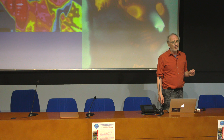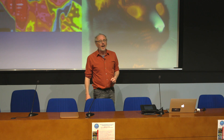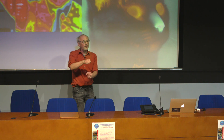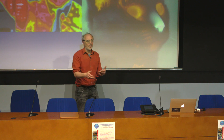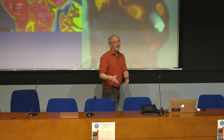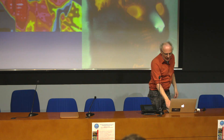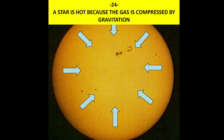Why are the stars hot? It's because they are made of gas compressed by gravitation. Every one of you has pumped air into bicycle tires, and you have seen that the pump becomes hot, because you are compressing gas. You are giving mechanical energy to the gas, and this mechanical energy is distributed in the random movement of the gas, increasing its entropy. What makes stars hot is that the gas is confined by gravity in a relatively stable spherical shape whose radius does not change within a human lifetime.